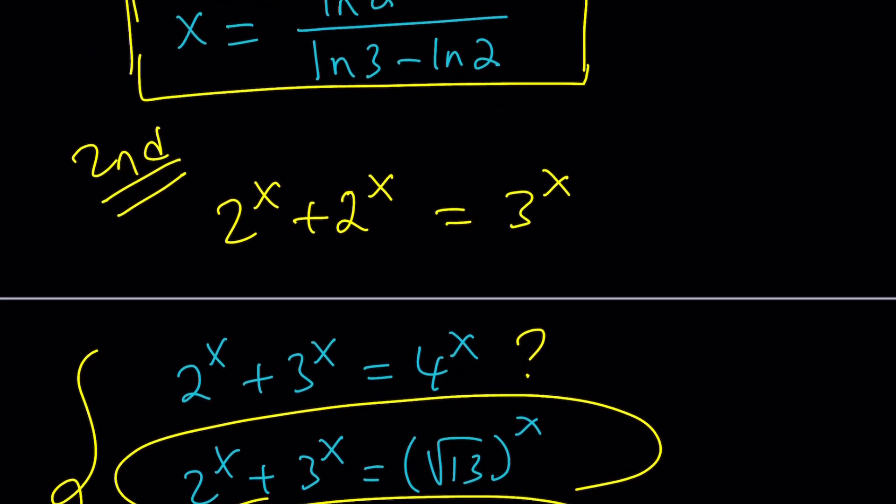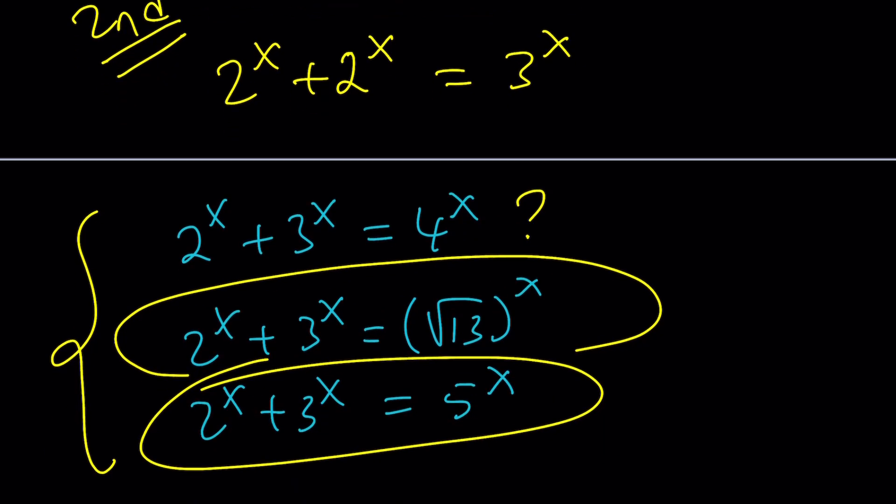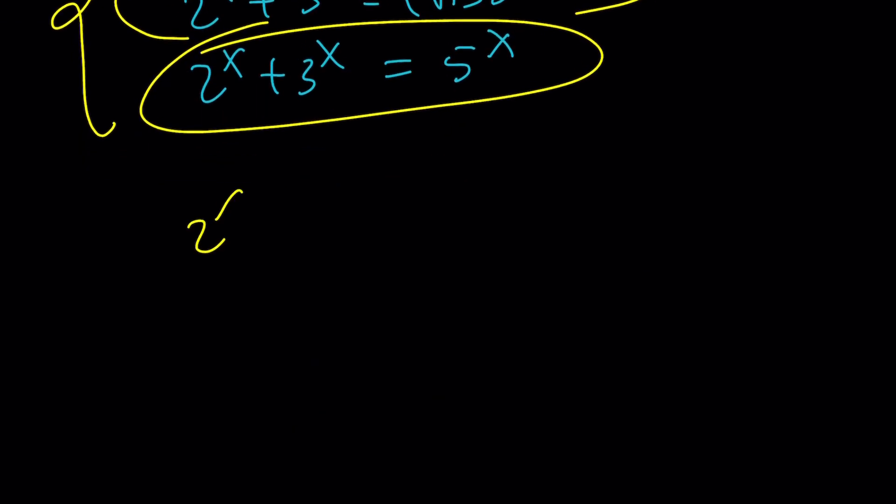But the first one is going to be pretty interesting. Do you think we can solve this problem and find the x values without approximating, without any numerical approaches? I'm not talking about numerical analysis here. Anyways, I just wanted to pose these questions and then continue with the second method. So, we have 2^x + 2^x = 3^x. So, how do we proceed with that, right? Again, just like before, we're going to write this as 2 times 2^x = 3^x.